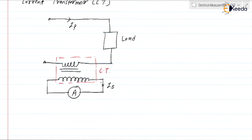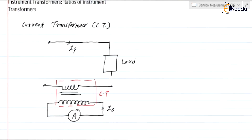This is a simple measuring instrument of normal range. If the current is in kilo-amperes, the CT will convert that kilo-ampere current into the ampere range, which can then be measured by a standard available ammeter. Similarly, we also have the potential transformer.